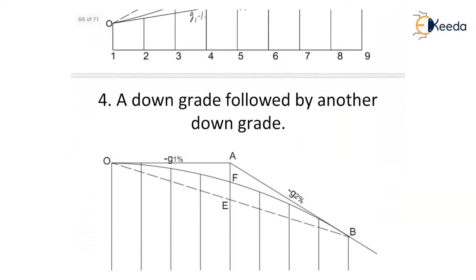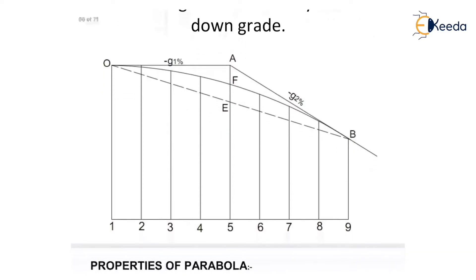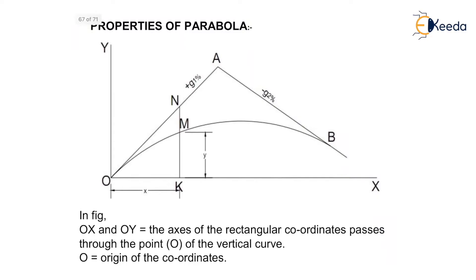Now let us discuss some properties of parabola, since the vertical curve is in the form of a parabola. In the figure, OX and OY are the axes of rectangular coordinates with O as the origin. OA and OB are the tangents of the vertical curve, with G1 positive percent as the grade of tangent OA and minus G2 percent as the grade of tangent AB — this is the upgrade followed by downgrade type.